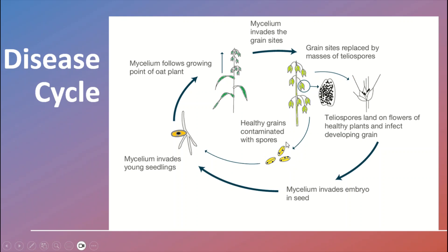The seeds are invaded or contaminated with spores. When the seedling germinates, the mycelia invade the young seedlings and follow the growing points of oats by moving upward. The mycelia then invade the grain sites, infecting the grain and replacing the tissue with teliospores. These teliospores land on the flowers of healthy plants, infect the developing grains, and the cycle starts again.